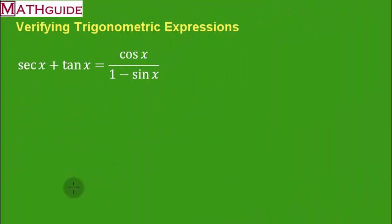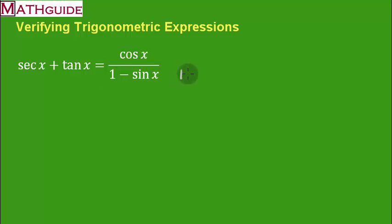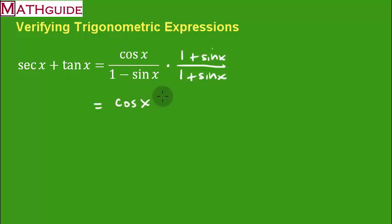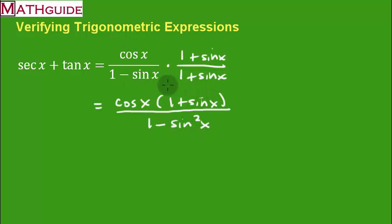Here's our last example — we're going to verify this identity. I want to use the same conjugate-multiplication property as before, dealing with the denominator. I'll multiply top and bottom by one plus sine x. In the numerator not much happens — it's a somewhat unwieldy mix — but in the denominator, multiplying those two factors gives one minus sine squared x.